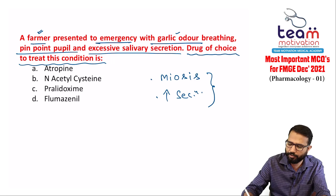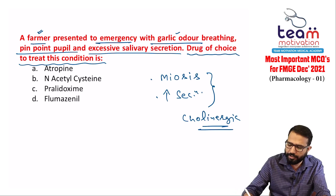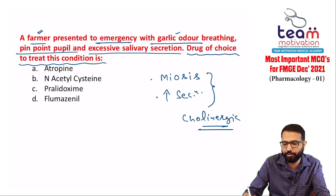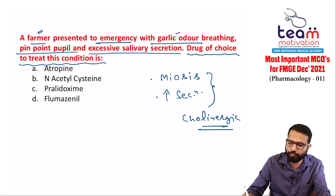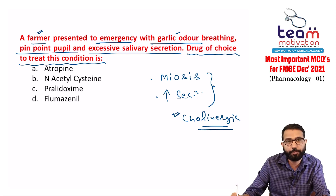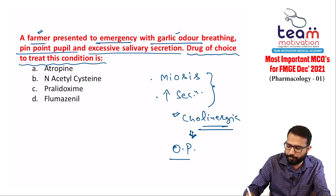These symptoms are characteristic of cholinergic overdose — opposite of anticholinergics. In anticholinergics we have mydriasis and decreased secretions; here it is cholinergic excess. The farmer history, garlic odor, miosis, and hypersalivation are all typically due to organophosphate poisoning.